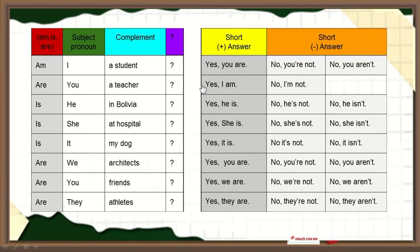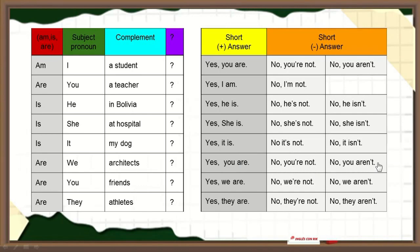Are you a teacher? Yes, I am. No, I'm not. Is he in Bolivia? Yes, he is. No, he's not. No, he isn't. Is she at the hospital? Yes, she is. No, she's not. No, she isn't. Is it my dog? Yes, it is. No, it's not. No, it isn't. Are we architects? Yes, you are. No, you're not. No, you aren't. Are you friends? Yes, we are. No, we are not. No, we aren't.